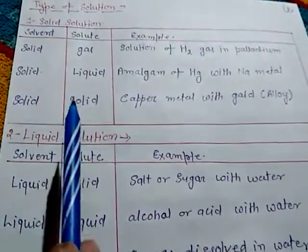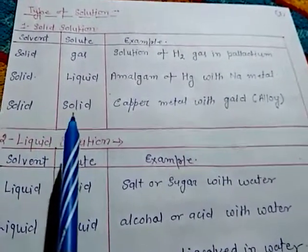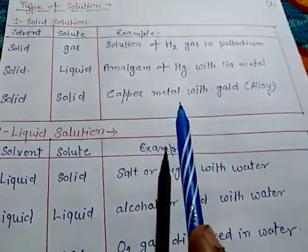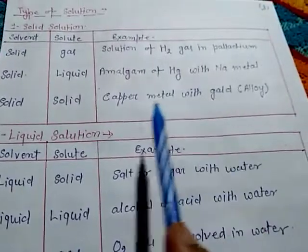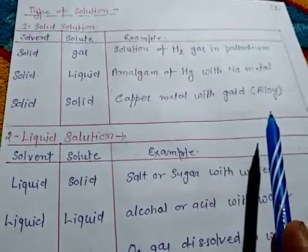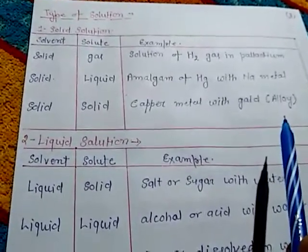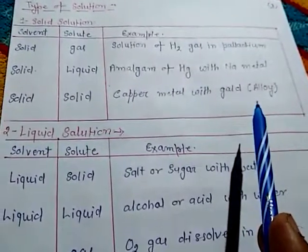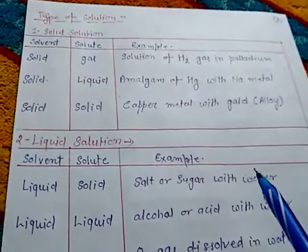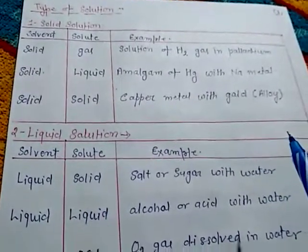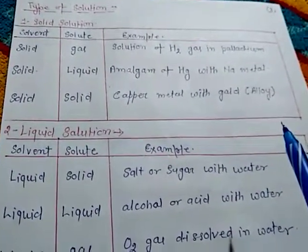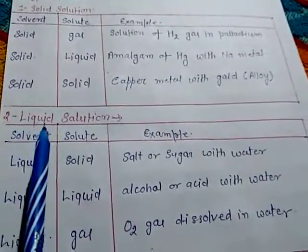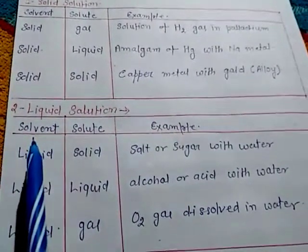When both solvent and solute are solid, for example copper metal with gold: when these two are mixed, they form an alloy used to make different parts such as motorcycle wheels and large mechanical components. Alloys are mixtures of two or more metals combined together.